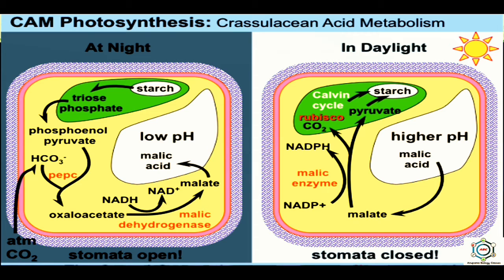In the metabolic pathway of CAM, during night when stomata are open, carbon dioxide combines with phosphoenolpyruvic acid (PEP) to form oxaloacetic acid (OAA) in the presence of enzyme PEP carboxylase. This oxaloacetic acid is subsequently converted to malic acid in the presence of enzyme malic dehydrogenase, with the reaction occurring in the presence of NADH produced in glycolysis. The malic acid produced during acidification in the dark is stored in the vacuole at low pH.